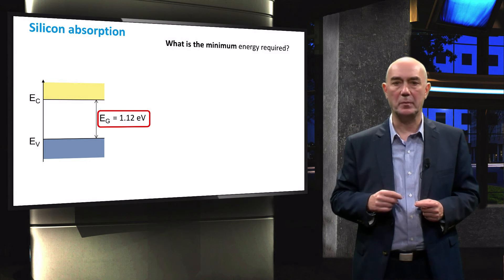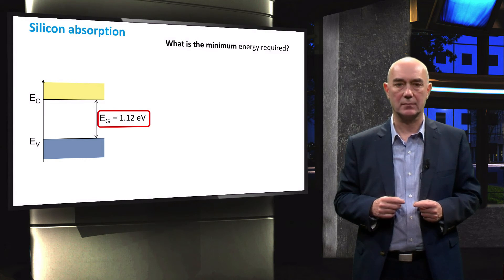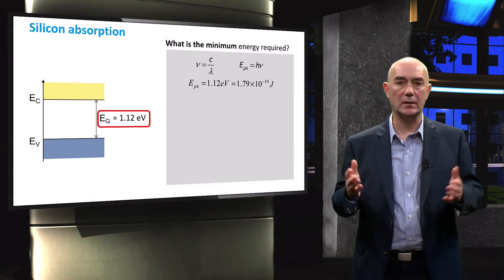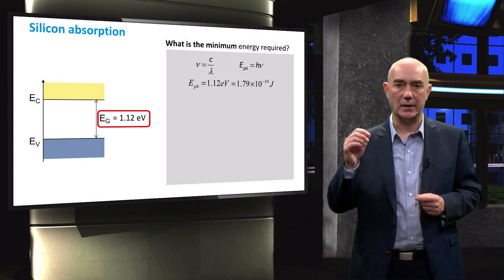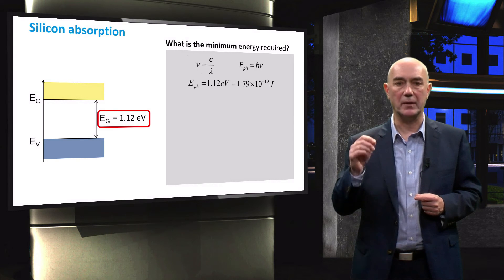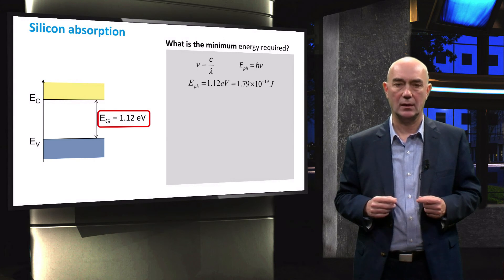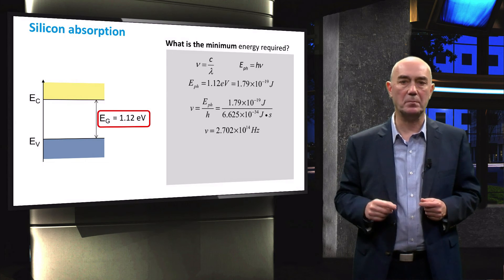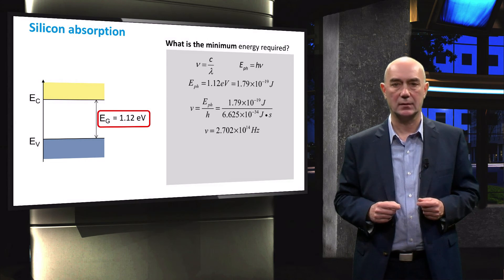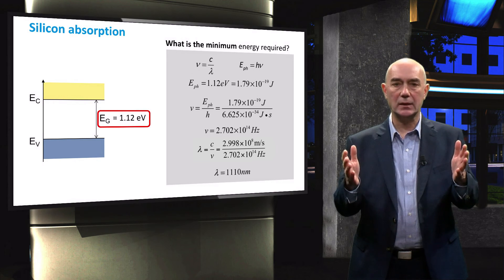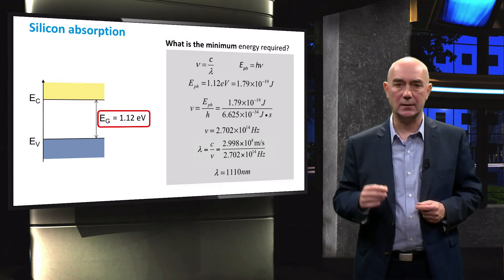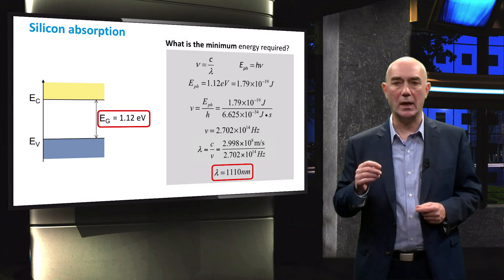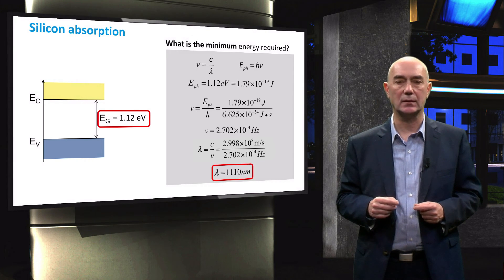Now let's compare your answer with ours. First of all, we need to determine the frequency of light when having an energy of 1.12 eV. We find that this is 2.7 times 10 to the power of 14 Hz. Then we can calculate the maximum wavelength of light that can be absorbed by silicon. It results to be 1110 nm.